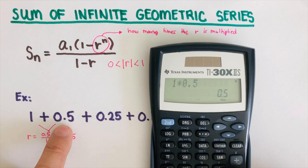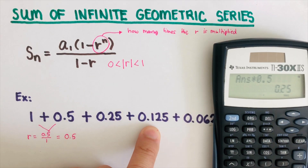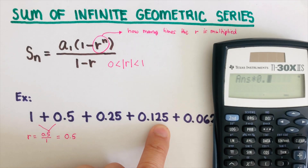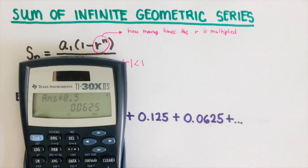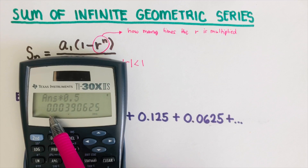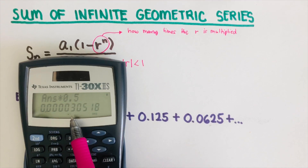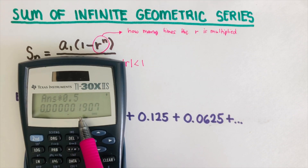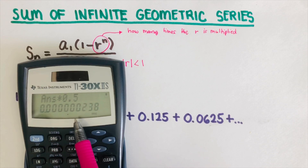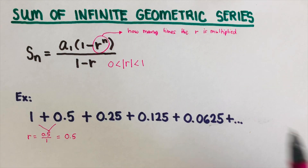On the calculator, we multiply 1 times 0.5 to get the next term. Continuing to multiply by 0.5: 0.5 times 0.5 is 0.25, times 0.5 is 0.125, times 0.5 is 0.0625. If I continue to multiply by 0.5 going to infinity, you can see that we get more and more zeros — the value is getting closer and closer to zero.